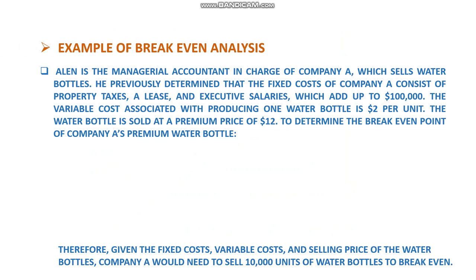Problem: Alan is the managerial accountant in charge of a company which sells water bottles. It was previously determined that the fixed costs of the company — consisting of property tax, lease, and executive salaries — add up to one lakh dollars. The variable cost associated with producing one water bottle is two dollars per unit. The water bottle is sold at a premium price of twelve dollars. Determine the break-even point of the company's premium water bottle.